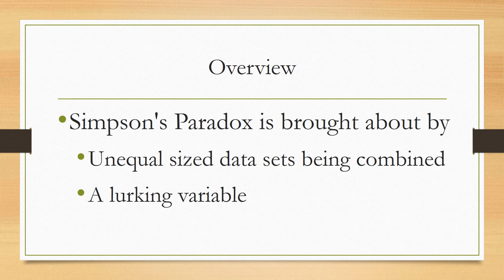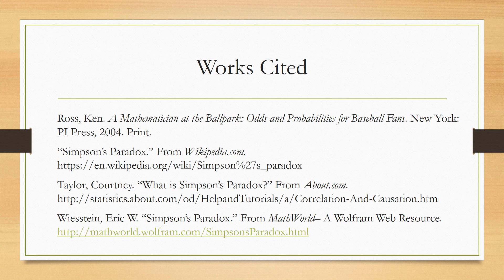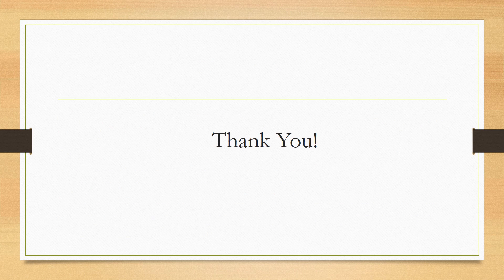After looking at these three examples, we can conclude that Simpson's Paradox is brought about by two different things: either unequal-sized data groups being combined — as in the baseball statistics example — or by a lurking variable, as in both the surgery survival rates and the UC Berkeley admissions examples. Thanks for listening.